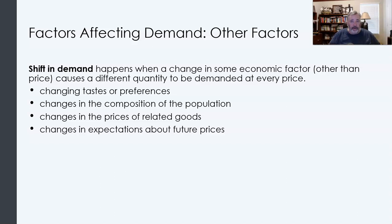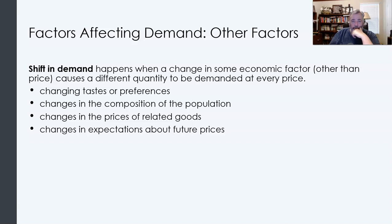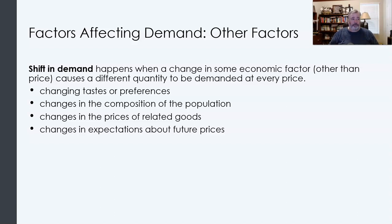One of the key differences between a change in demand and a change in quantity demanded is how each is modeled graphically. A change in demand is a shift of the entire demand curve left or right — a rightward shift is an increase in demand, a leftward shift is a decrease in demand. A change in quantity demanded is simply movement along the existing demand curve — you're just changing where you are in the demand schedule. A change in demand means you have an entirely different demand schedule, where every single price-quantity demanded combination has changed.